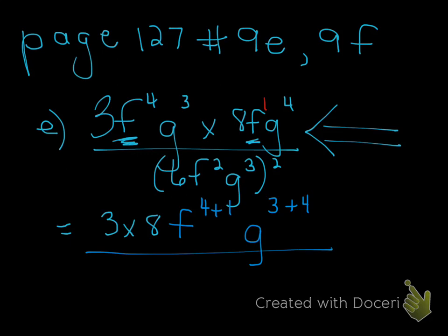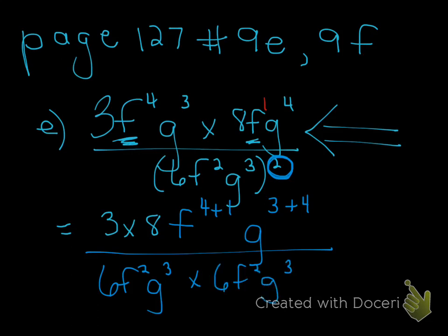In the denominator, I want you to expand the expression that's in the bracket twice. So we're going to write 6f²g to the power of 3 times 6f²g to the power of 3. You can choose to put the multiplication sign, or you can just rewrite the brackets like that. You rewrite the same bracket twice because of the exponent 2.